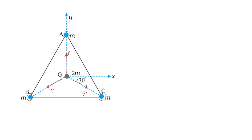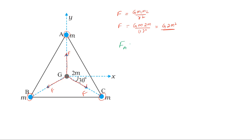According to Newton's universal law of gravitation, F equals G times M1 times M2 divided by R squared. The magnitude of the force F is equal to G into 2M squared divided by 1 squared. The force experienced by A is in the positive y-direction, so F equals G times 2M squared times j-cap.